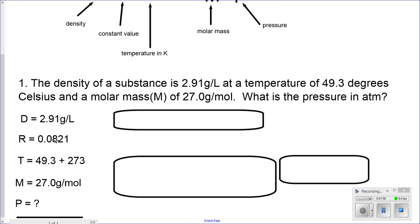Temperature, 49.3 plus 273, which gives you 322.3. Molar mass is given to you, it's 27 grams per mole. And the pressure is asked to be found in atm. Therefore, I give R this value because the question says to find the pressure in atm.